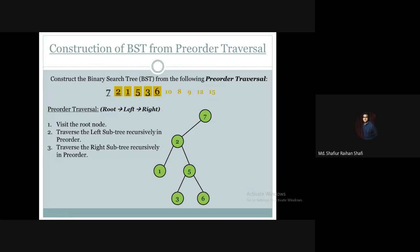For the right subtree, the elements are 10, 8, 9, 12, 15. Since 10 comes first in the sequence, 10 will be the root of the right subtree. Elements 8 and 9 are less than 10, so they will form the left subtree of 10. Elements 12 and 15 are greater than 10, so they will move to the right subtree of 10.